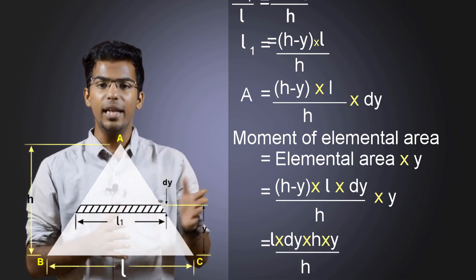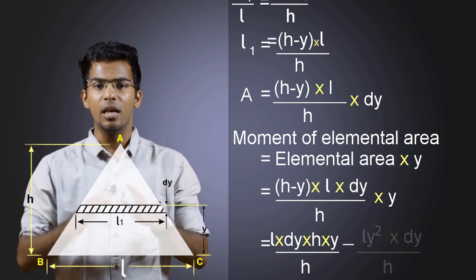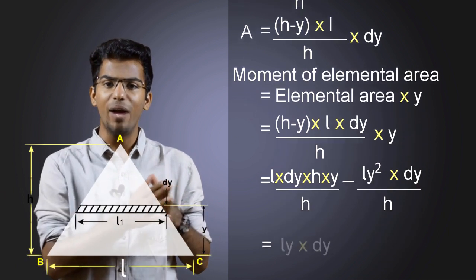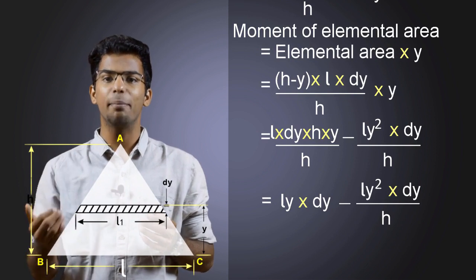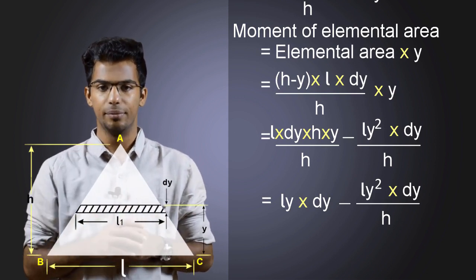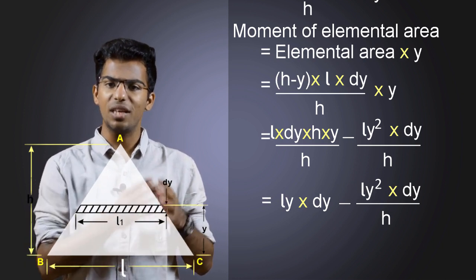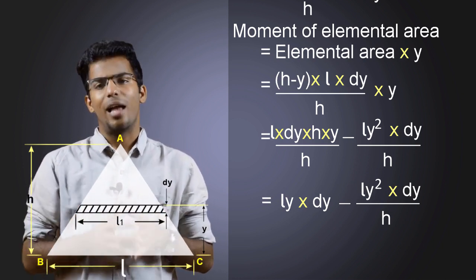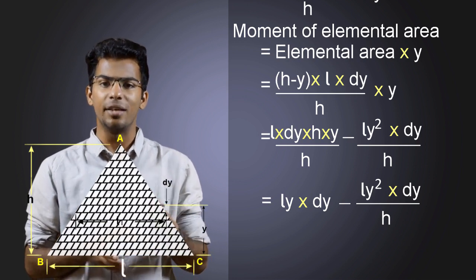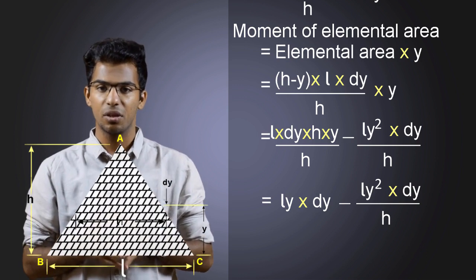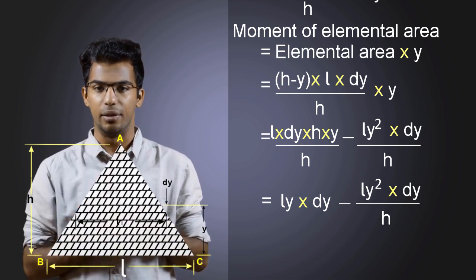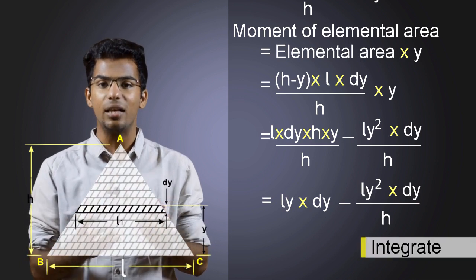By rearranging, we get L times DY times Y divided by H minus L times Y squared times DY divided by H. This is the moment of area of one elemental strip inside the triangle. The triangle can be constructed by such elemental areas. We need to add up all these areas to find the total moment of area of the triangle. The easiest way is to integrate our moment of area equation.